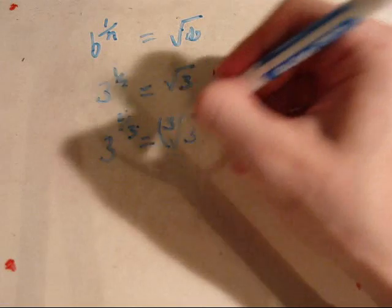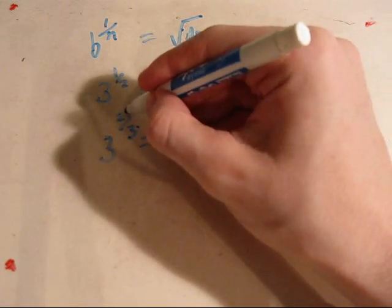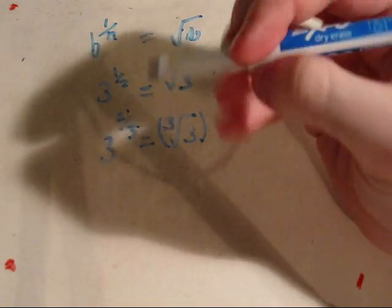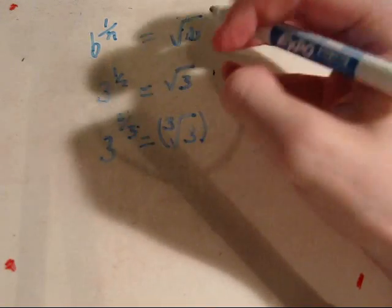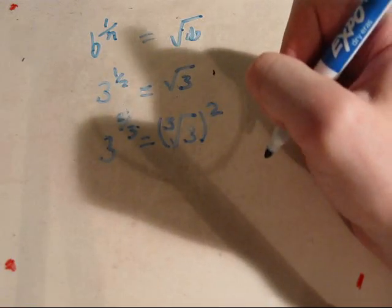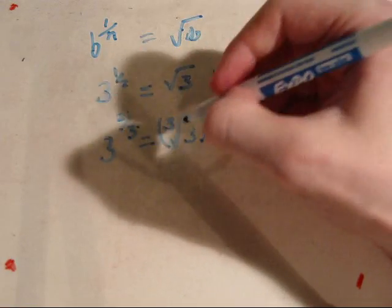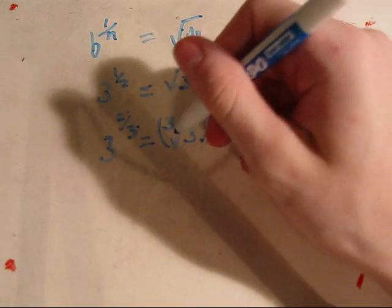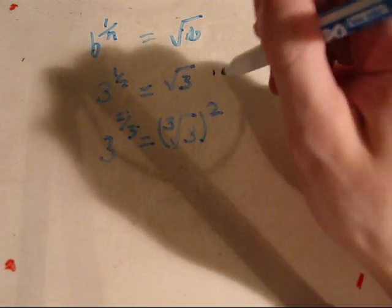And it multiplies, rather it does an exponent similar to the numerator of the rational exponent. So it'd be the cube root of 3 squared.